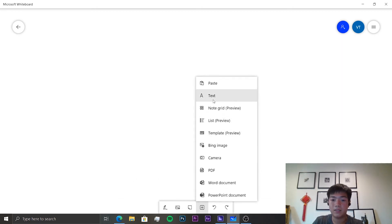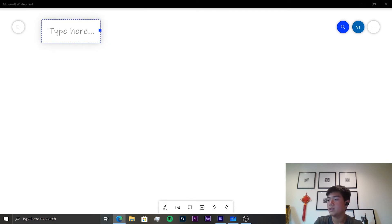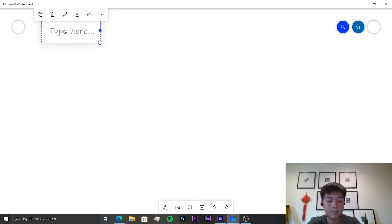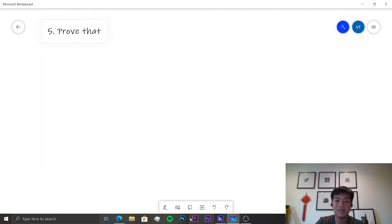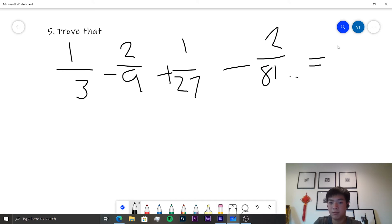Now let's move on to the next one. The next thing we need to prove is that 1/3 - 2/9 + 1/27 - 2/81 dot dot dot is equal to 1/8.